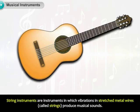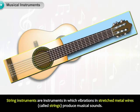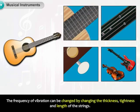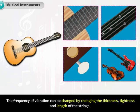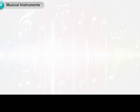String instruments are instruments in which vibrations in stretched metal wires, called strings, produce musical sounds. The frequency of vibration can be changed by changing the thickness, tightness, and length of the strings.